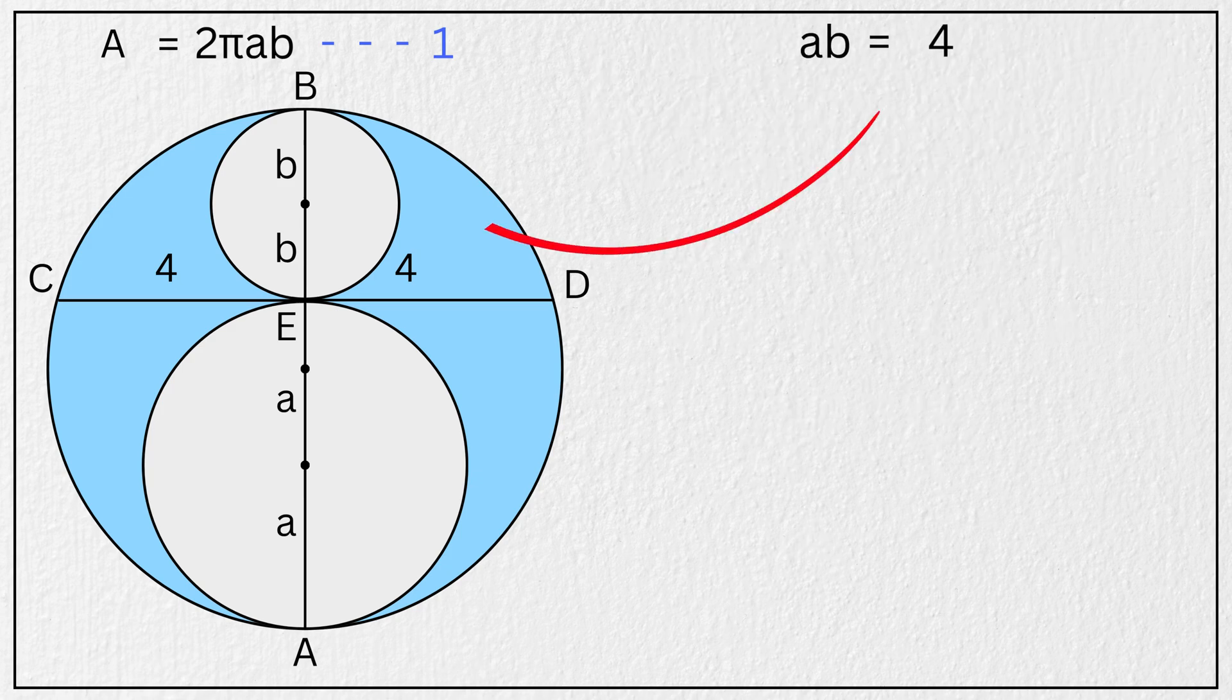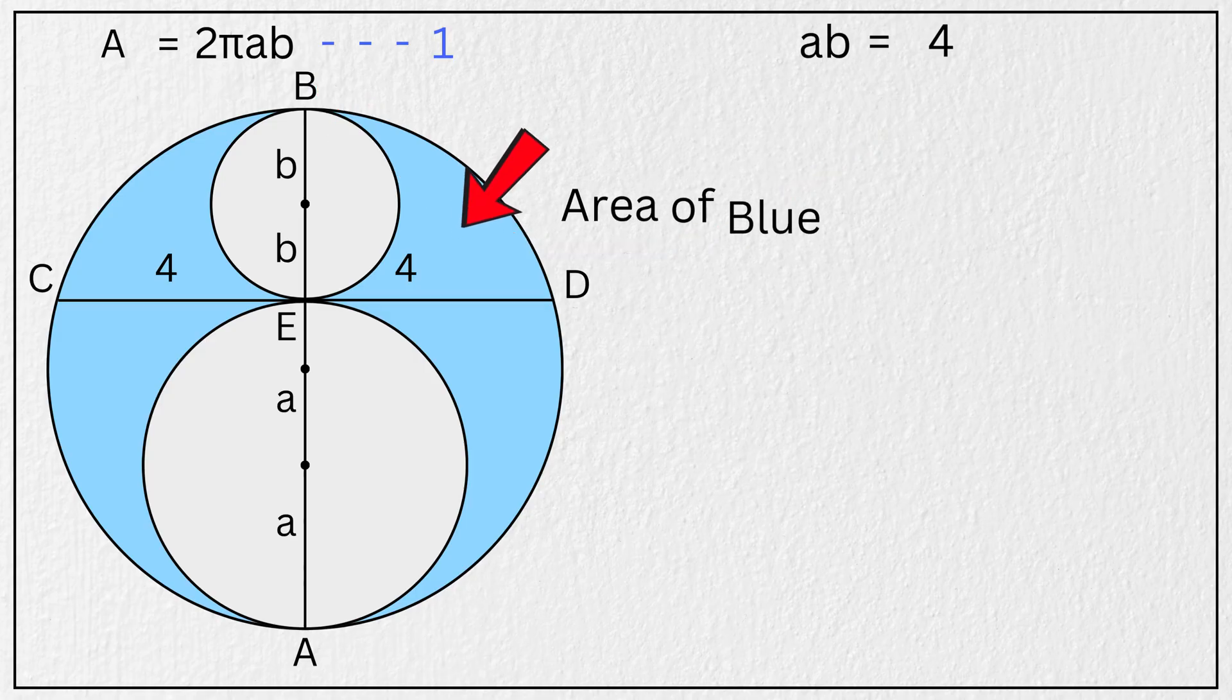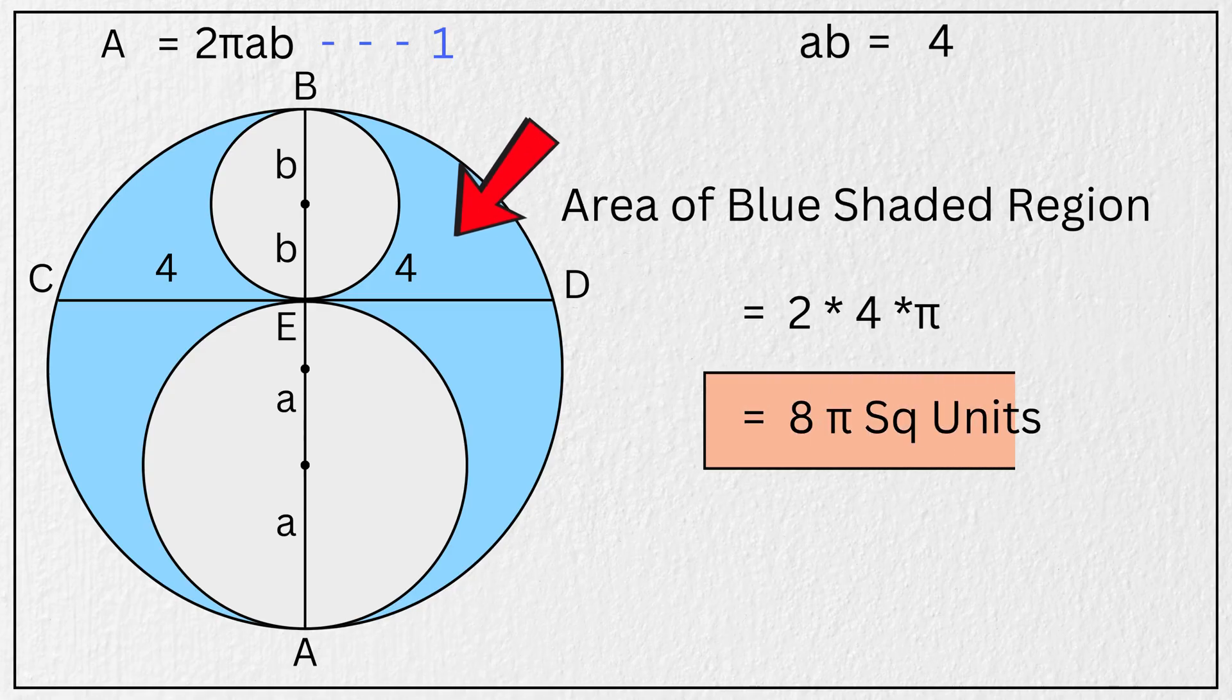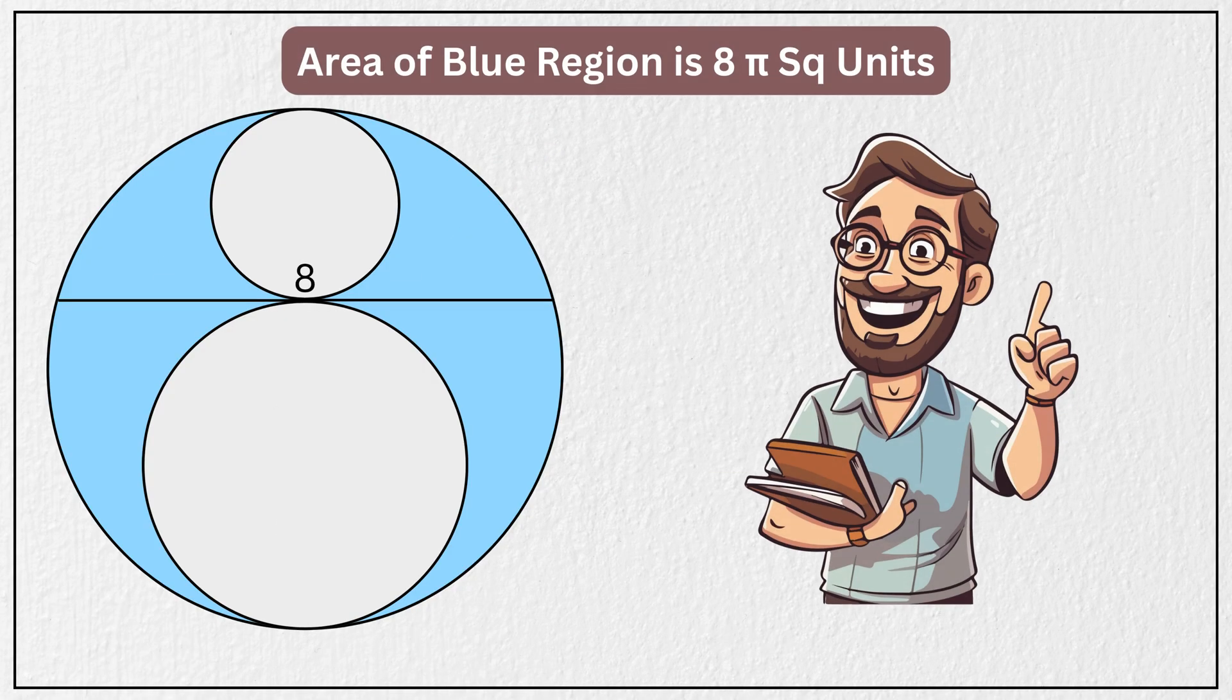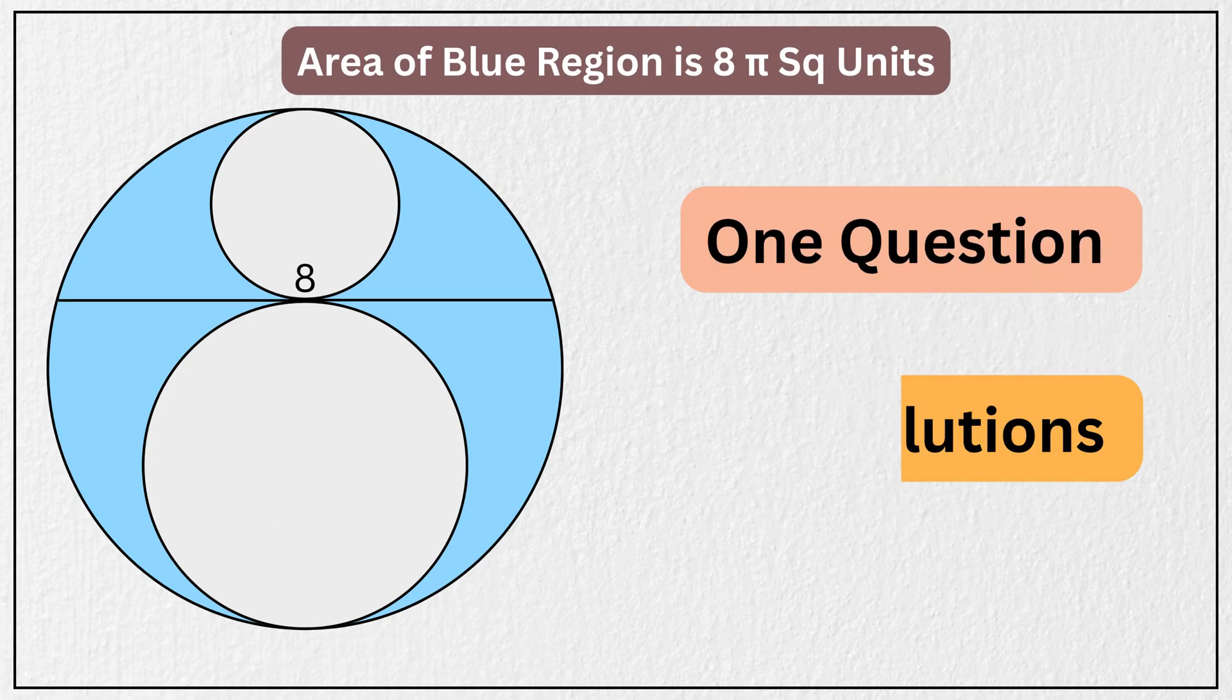And substituting AB equals 4 into our area formula, we again find area of the blue shaded region equals 2 times 4 times π, which equals 8π square units. The same result as our first method. Pretty amazing, isn't it? One question, yet two different ways to solve it.